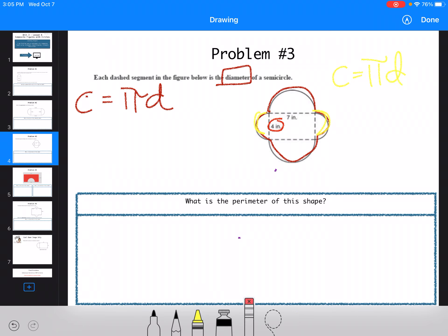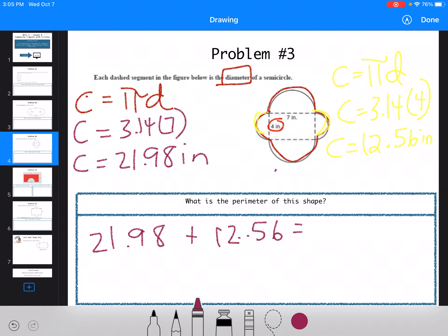So C equals 3.14 times 4. And I get C equals 12.56. And it's going to be inches. Not inches squared because we're talking about a distance. Then I'm going to find the circumference of the other one. So C equals 3.14 times 7 this time. So 3.14 times 7 gives me a circumference of 21.98 inches. So I haven't found the total yet. I have to add those together. So 21.98 plus 12.56. I get a total of 34.54 inches. Remember it's a measurement so I'm not squaring it.